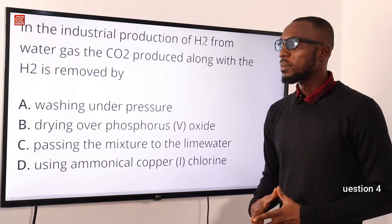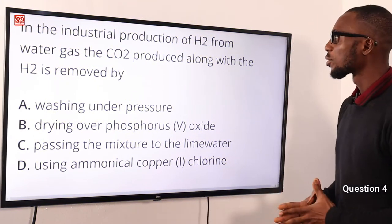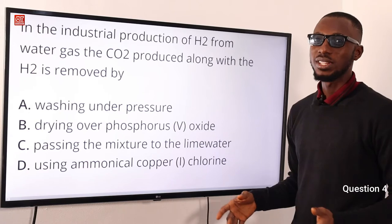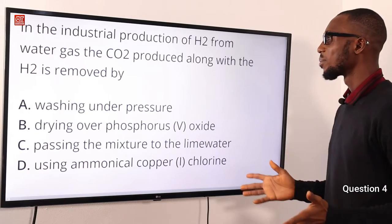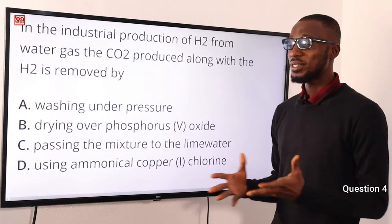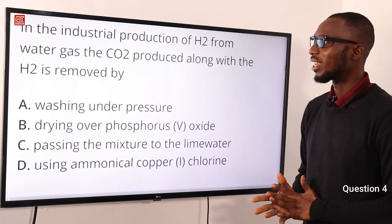Question 4. In the industrial production of hydrogen gas from water gas, the CO2 — carbon dioxide — produced along with the hydrogen gas is removed by what?